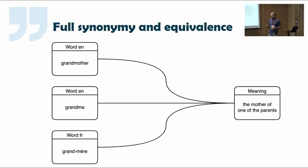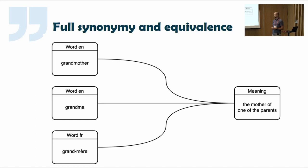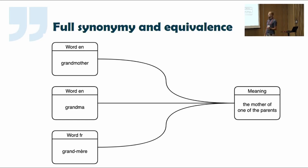As a database diagram, this looks like: if we have two words in English which are full synonyms — grandmother and grandma — they mean the mother of one of the parents, and we have a corresponding French word. Given the level of simplification we have chosen, if we consider them full equivalents, then we connect them to the same meaning.